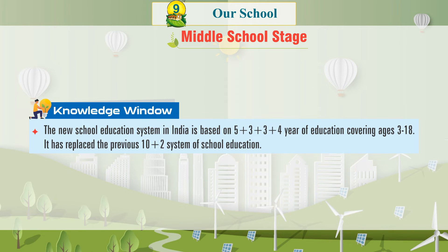Knowledge window. The new school education system in India is based on 5 plus 3 plus 3 plus 4 years of education covering ages 3 to 18. It has replaced the previous 10 plus 2 system of school education.